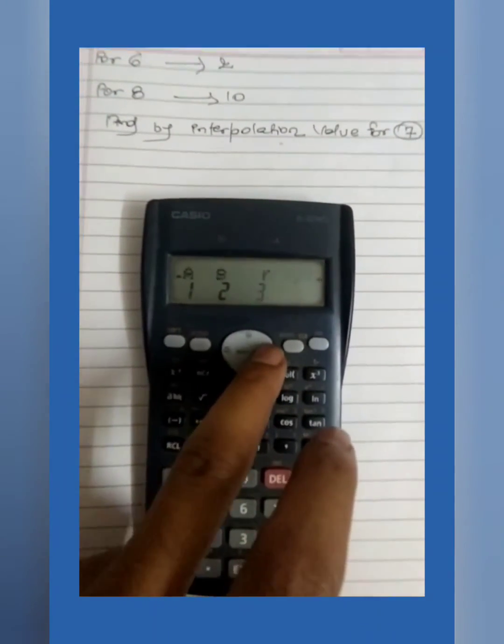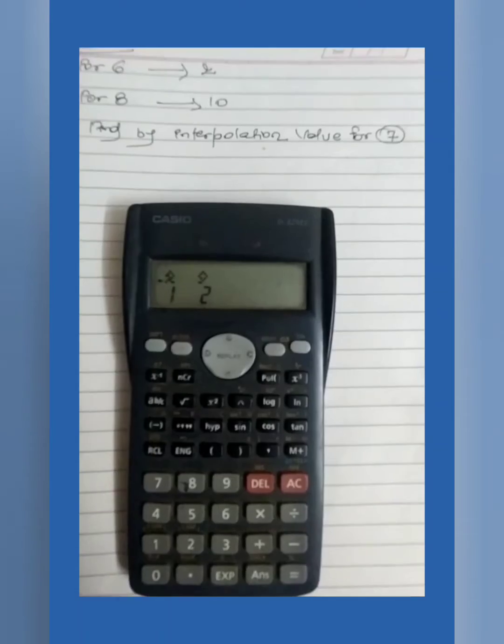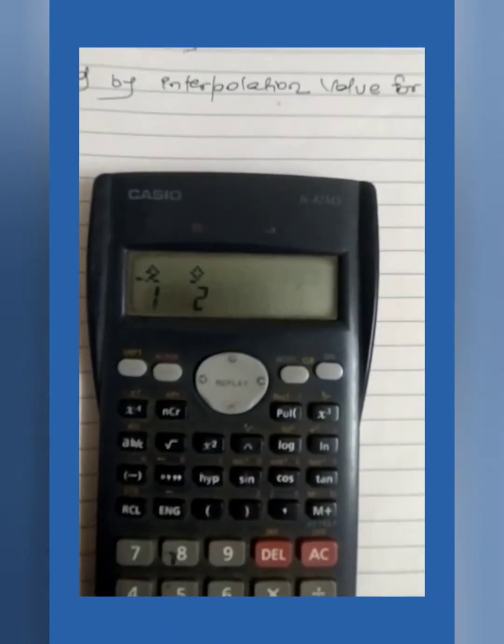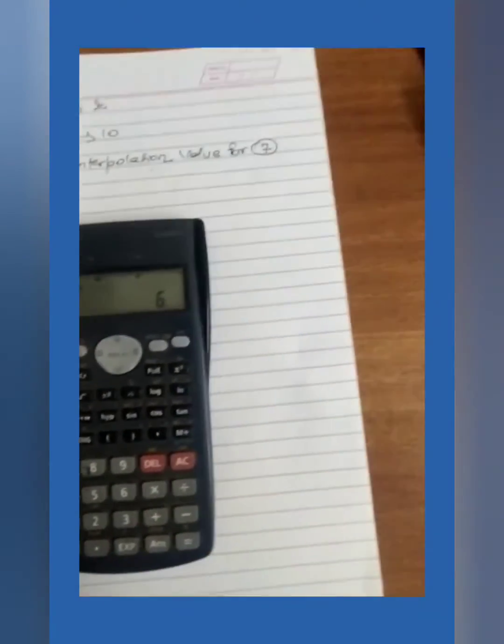Then we will use this button and we will go to this button 2. That is the sign for interpolation. You can see the sign differs from calc to calc. We will press 2 and then we will press equal to.